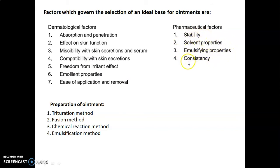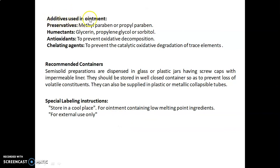Preparation of ointment includes four methods: trituration method, fusion method, chemical reaction method, and emulsification method. Additives used in ointment are preservatives like methylparaben or propylparaben, humectants like glycerine, propylene glycol or sorbitol, antioxidants used to prevent oxidative decomposition such as BHA (butylated hydroxyanisole) or BHT (butylated hydroxytoluene), and chelating agents like EDTA (ethylenediamine tetraacetic acid) to prevent catalytic oxidative degradation of trace elements.